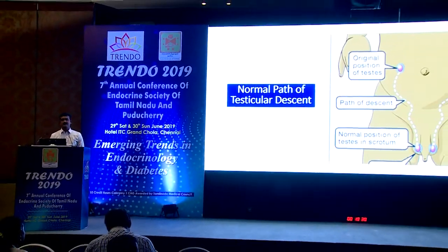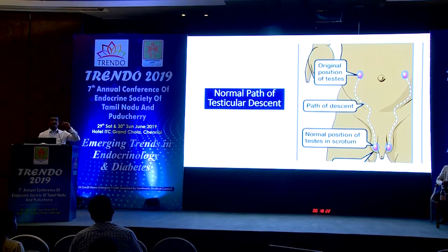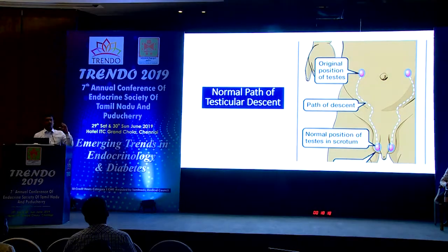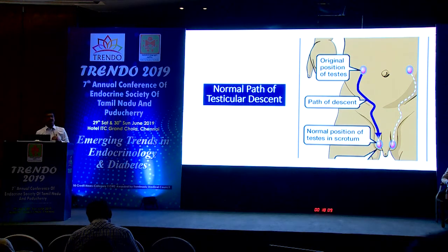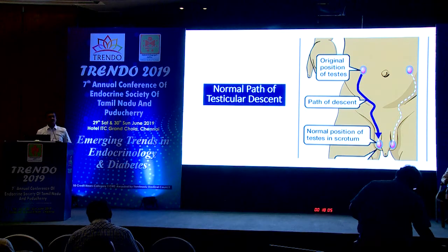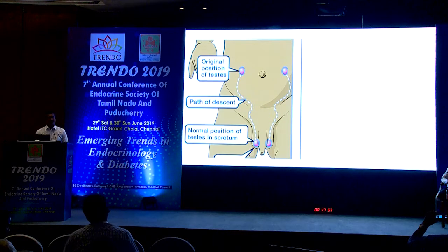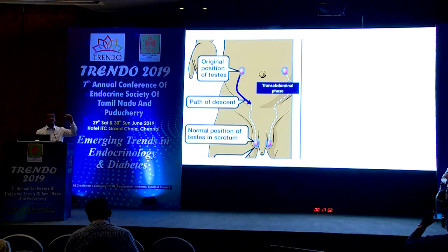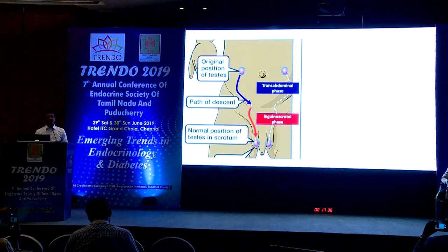Before understanding possible reasons for undescended testis, we need to know the normal path of testicular descent. The testis is located in its original abdominal position until around 8 to 10 weeks of gestation. After 8 to 10 weeks, it descends through the deep inguinal ring, through the inguinal canal, through the superficial inguinal ring, and then to the base of the scrotum. This descent is divided into two main phases: the transabdominal phase and the inguinal scrotal phase.